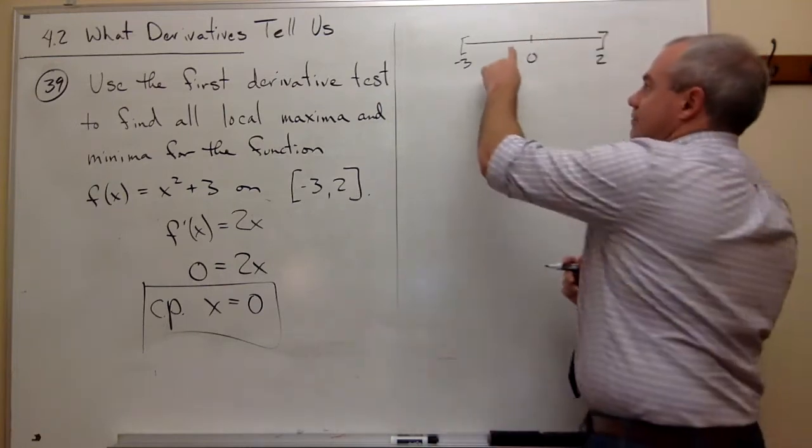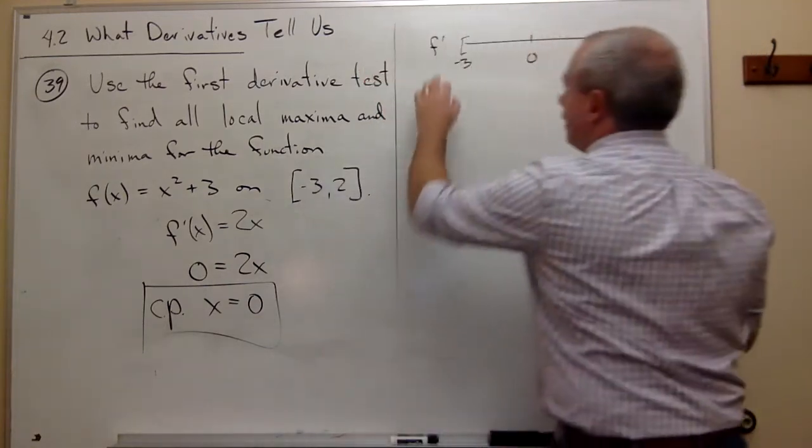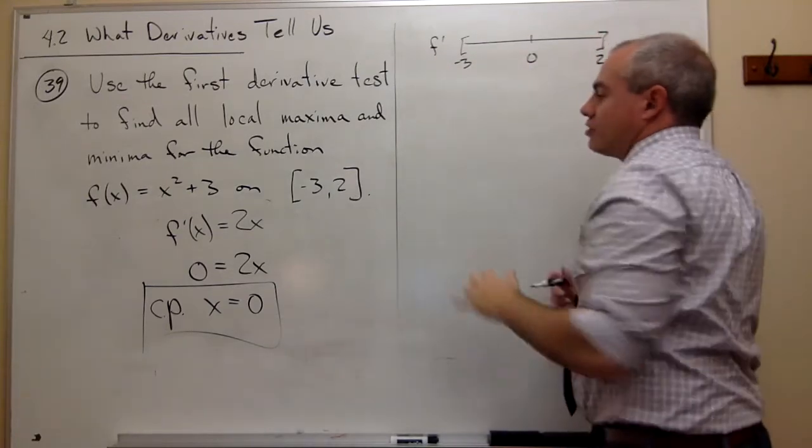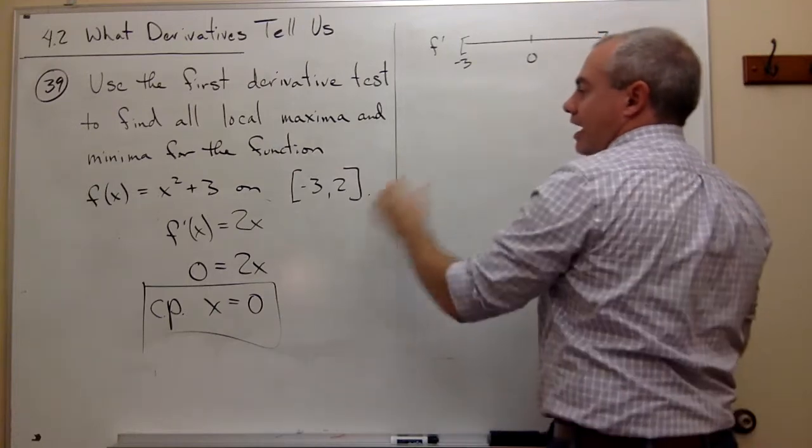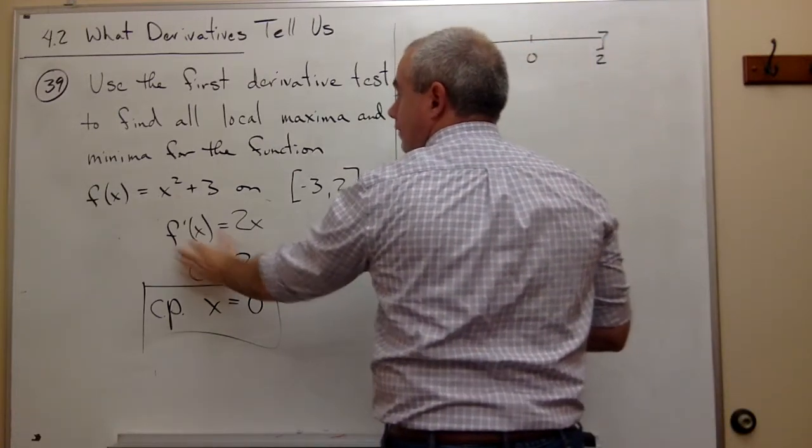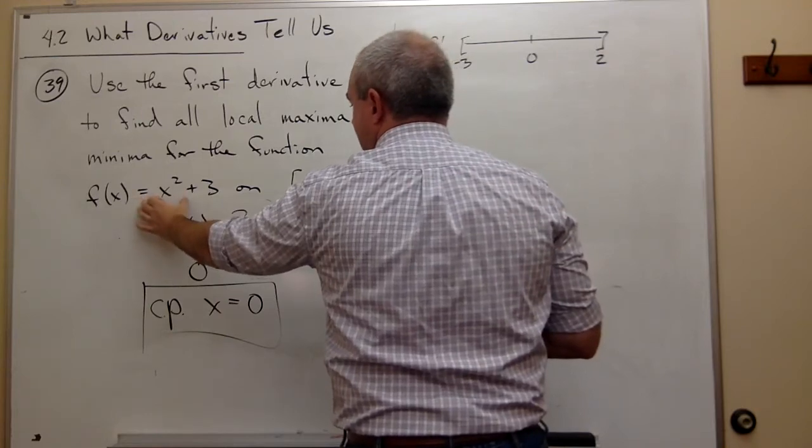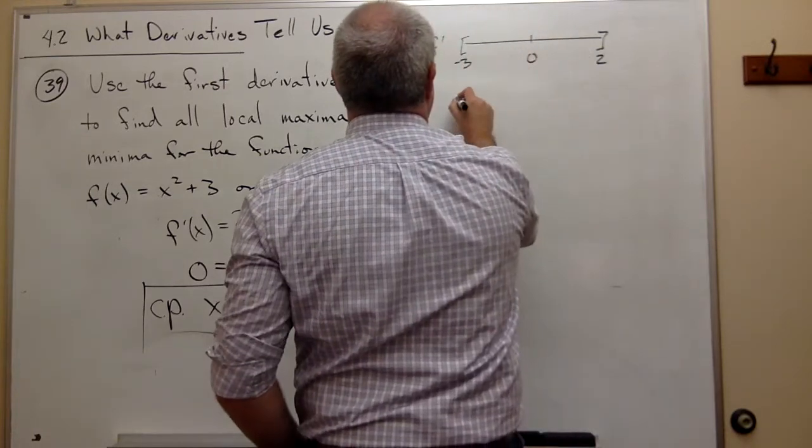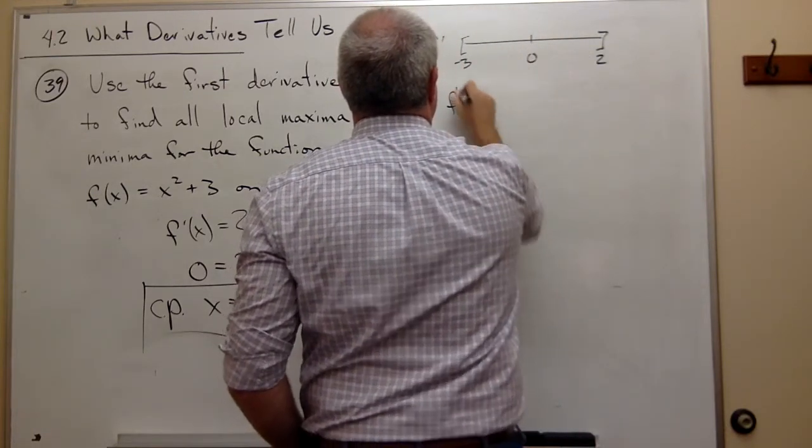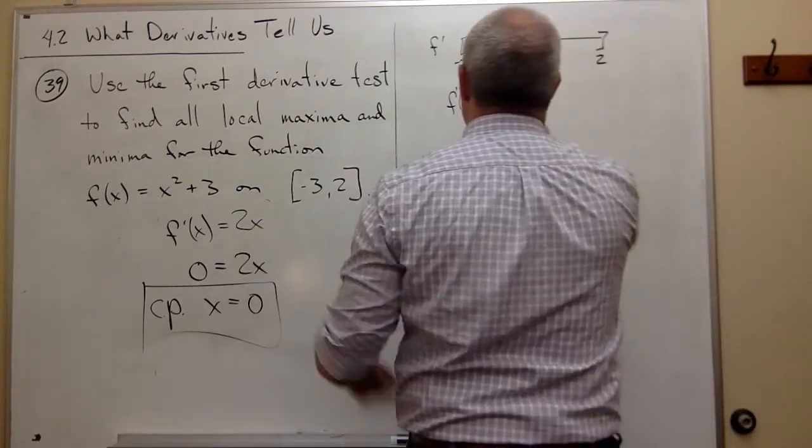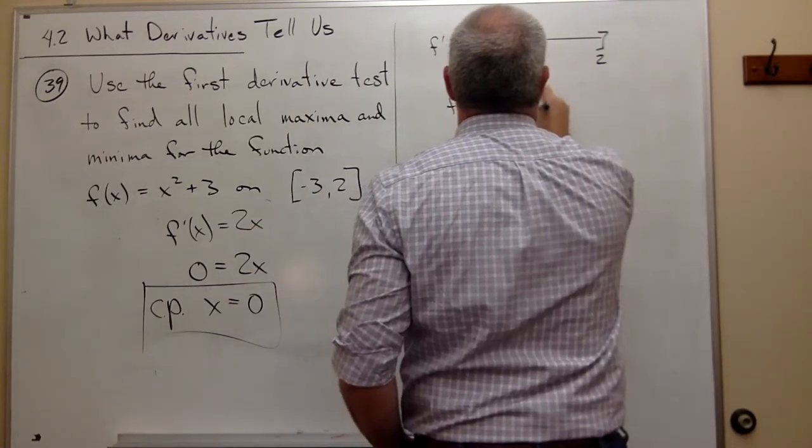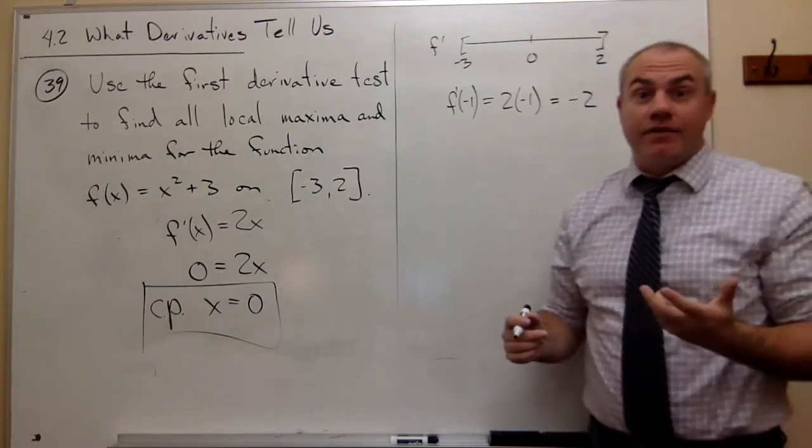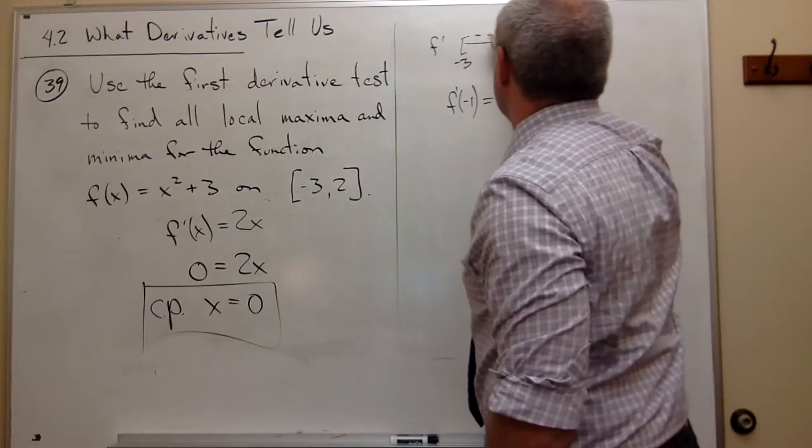I want to test these points. Remember, this is the first derivative, and I want to test something between -3 and 0. How about -1? I plug -1 into the first derivative. If you plug it into the original function, that doesn't help us. You have to plug it into the first derivative. f'(-1) = 2(-1) = -2. What I really care about is that it's negative.